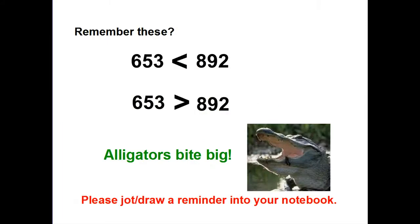Remember these signs? Right here it says 653 is less than 892. And the other one says 653 is greater than 892. Well, they both can't be right. Question is, which sign is correct? The easy way to remember it is, alligators bite big. They don't want snacks, they eat large things. So we always point the teeth toward the large object. Easy enough.